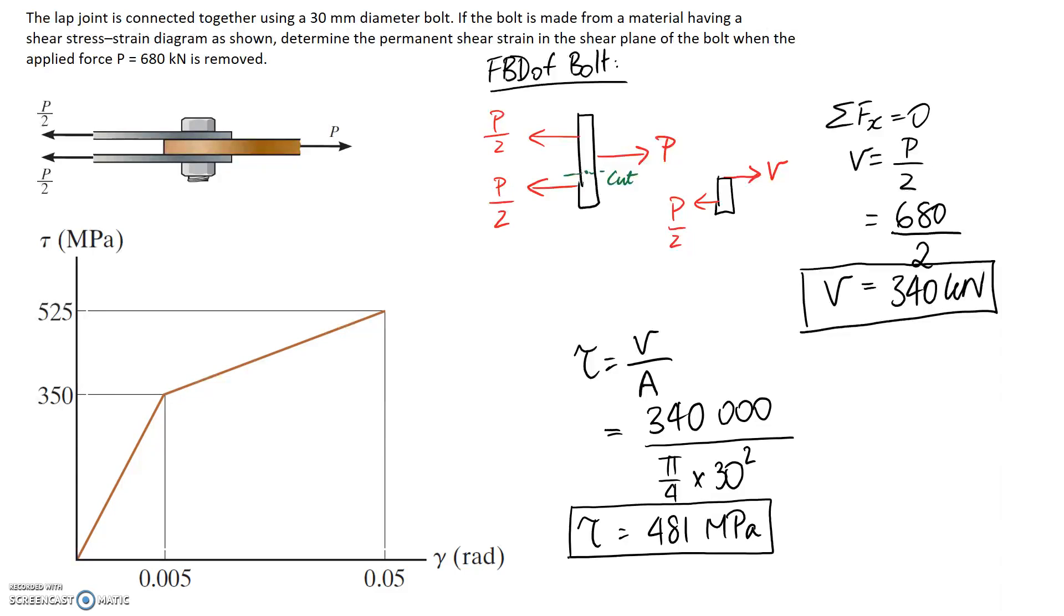Alright, so now the challenge is to work out what strain this corresponds to, because we're asked to find the strain that permanently occurs in our material after a 680 kN force is removed. So if we try and look at it on the diagram, 481 is going to land I don't know somewhere here.